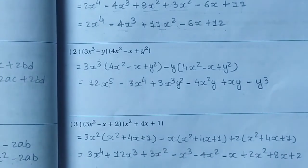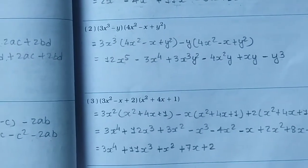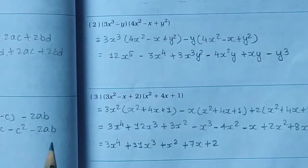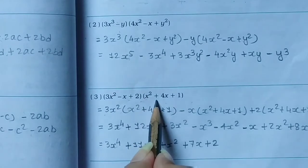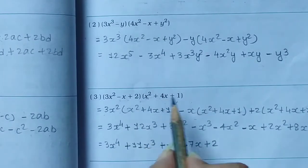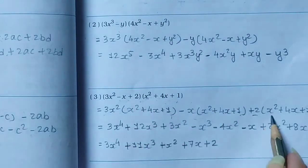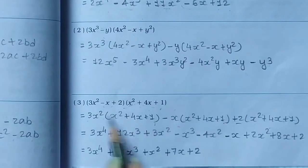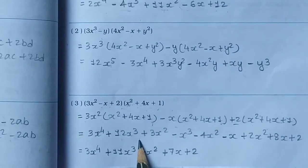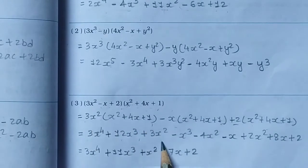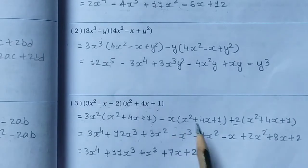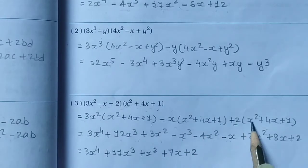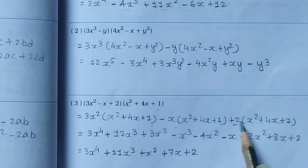Question number 3: (3x² - x + 2)(x² + 4x + 1). First 3x² into (x² + 4x + 1), then minus x into (x² + 4x + 1), and plus 2 into (x² + 4x + 1). Then 3 into x² = 3x⁴, 3 into 4x = 12x³, minus x into x² = -x³, minus 4 into x = -4x², minus x into 1 = -x, and 2 into x² = 2x², 2 into 4 = 8x, 2 into 1 = 2.